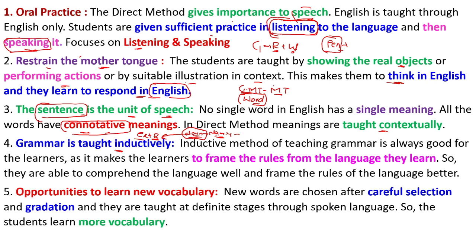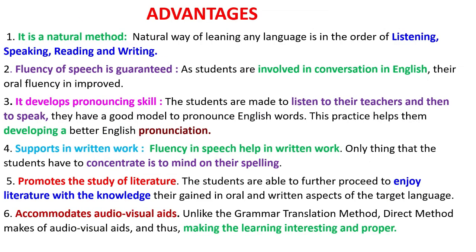In direct method, students have the opportunity to learn new vocabulary because they can go beyond the words and beyond the text. New words are chosen after careful selection and gradation, and they are taught at definite stages through spoken language, so students learn more vocabulary. In grammar translation, specific words are translated into the mother tongue and taught, but in direct method students are given much more than that.